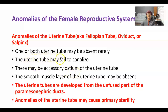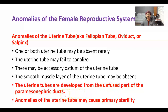If the uterine tubes fail to canalize and it is bilateral, that may lead to primary sterility — there is no canal, there will be no fertilization, so the woman would be sterile. The smooth muscle layer of the uterine tube may also be absent totally. The uterine tubes are developed from the unfused part of the paramesonephric ducts, and their anomalies may cause primary sterility.